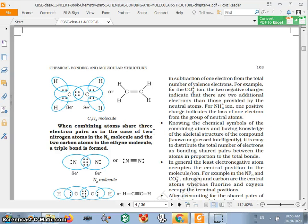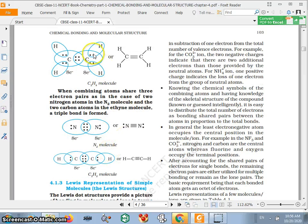So when combining atoms share three electron pairs, as in the case of two nitrogen atoms in N2 molecule and the two carbon atoms in the ethyne molecule, a triple bond is formed. You see, this is double bond, this is triple bond in acetylene.